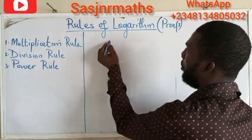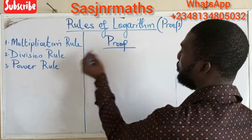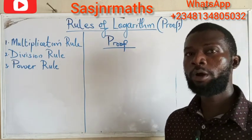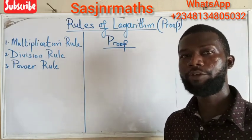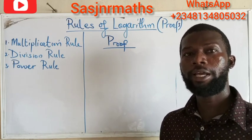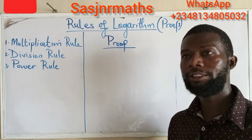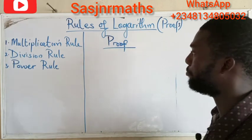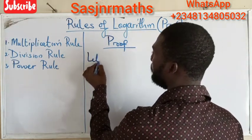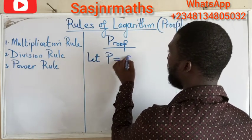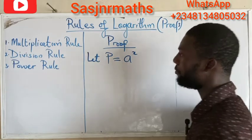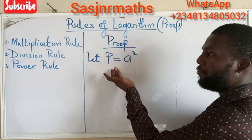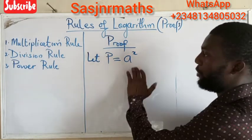Now I want to start with the multiplication rule. Before we can start proving, I want us to understand that there is a unique relationship between exponential form and logarithmic form. So I'm going to start by saying: let p equals a raised to power x, because we all know that this is an example of an exponential equation or exponentiation.